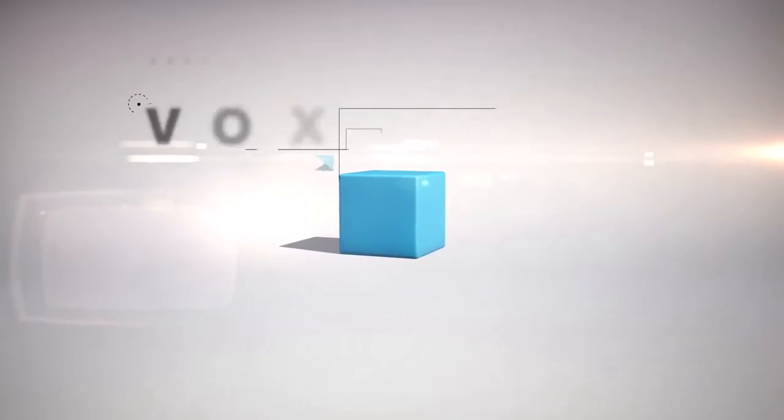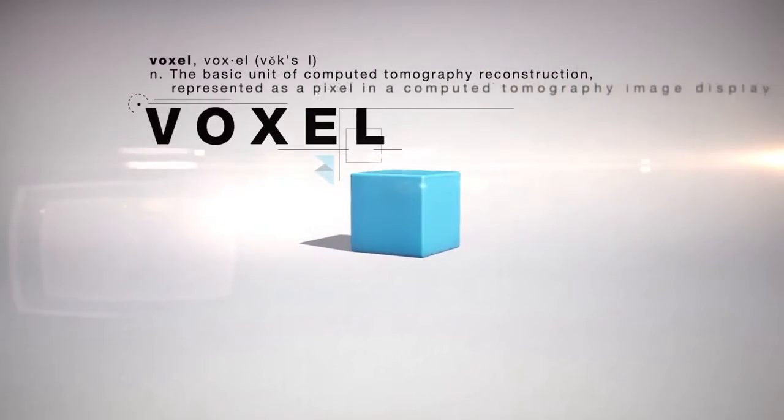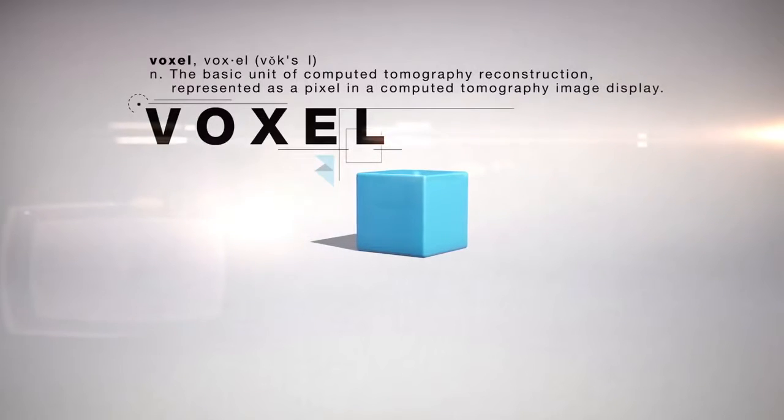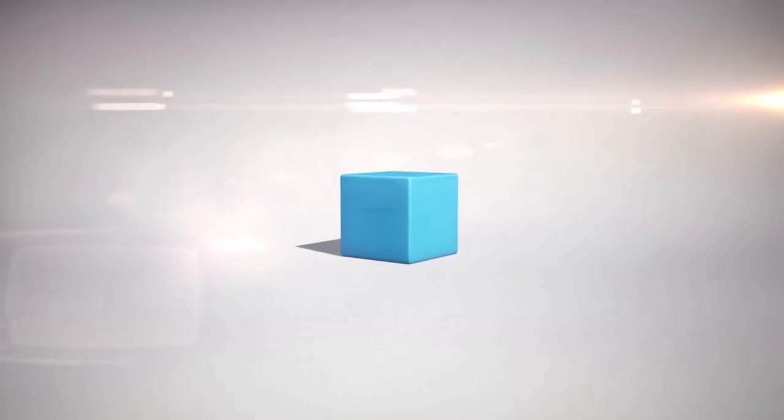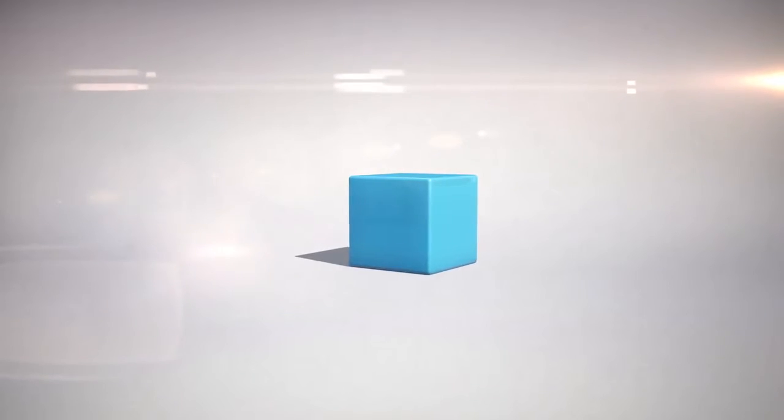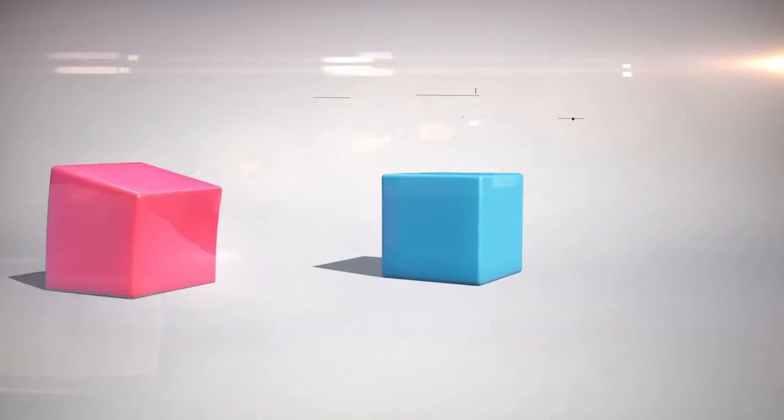If we were to take one of these pixels and extrude it in 3D, we would have a volumetric pixel, better known as the voxel. Voxels can have specific color properties similar to pixels, but also can be given specific material properties as they are tangible objects.